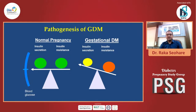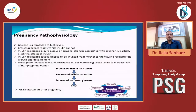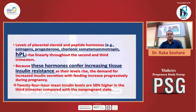This balance is basically handled by portal physiology. Pregnancy pathophysiology dictates that glucose is a teratogen at high levels and crosses the placenta readily while insulin cannot. There is decreased insulin secretion and increased maternal glucose, leading to the final complications of GDM. The levels of placental steroid and peptide hormones — like estrogen, progesterone, chorionic somatomammotropin, and HPL — rise linearly throughout the second and third trimester, conferring increased tissue insulin resistance as their levels rise.